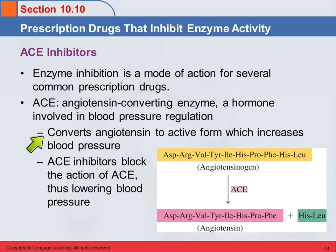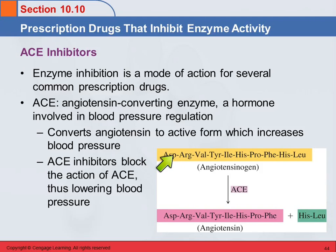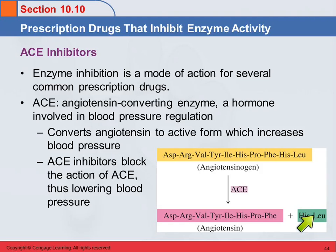What it does is convert angiotensin from its inactive form to its active form. Here we have a representation of the inactive form that your body keeps around waiting to be used. When blood pressure needs to be increased, this enzyme converts the angiotensinogen — which is a zymogen — to the active form, just by trimming off two amino acids at the end. So that causes your blood pressure to go up.